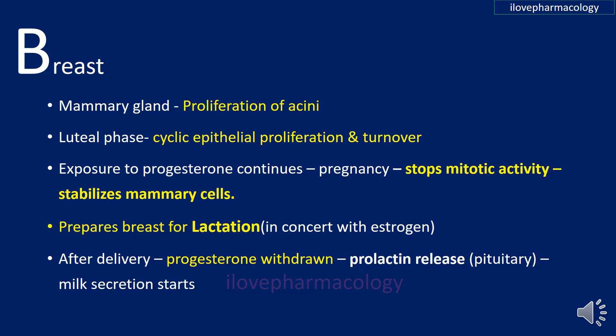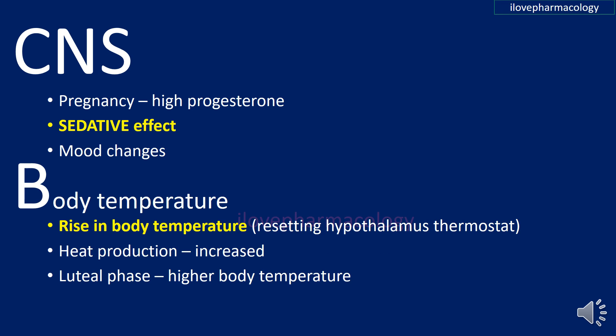Regarding the effect of progesterone on the CNS: during pregnancy, high progesterone concentration brings about a sedative effect and also affects mood. Regarding the effect on body temperature: there is a slight rise in body temperature by resetting the hypothalamic thermostat set point, with increased heat production — responsible for the elevated body temperature during the luteal phase.